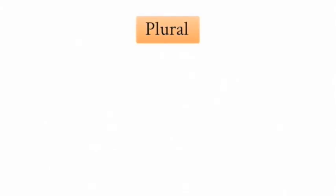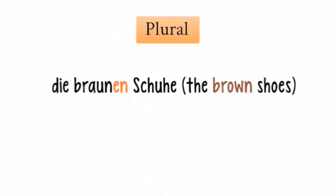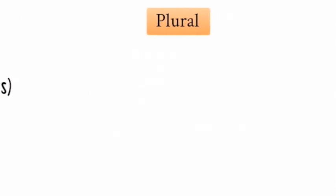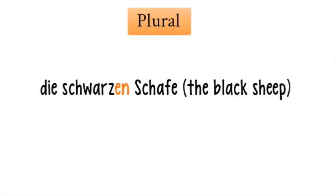Now let's have a look at the plural form. Die braunen Schuhe, 'the brown shoes.' The color adjective braun changes to braunen. The singular form of Die Schuhe is Der Schuh. The second example is Die schwarzen Schafe, 'the black sheep.' The adjective schwarz changes to schwarzen. The singular form of Die Schafe is Das Schaf. So the black sheep is Die schwarzen Schafe.